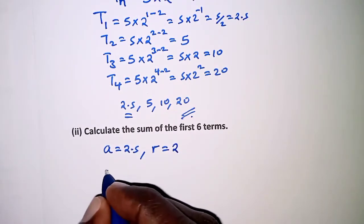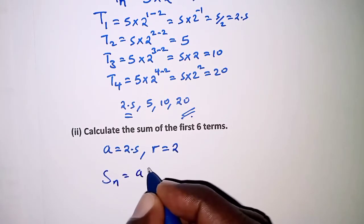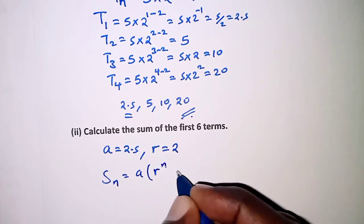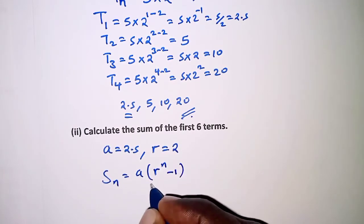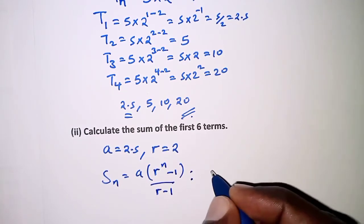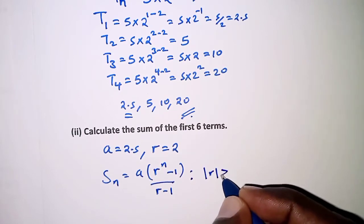GP, and the sum of GP is given by: the first term times r^(n-1) over (r-1). And this is specifically for the case where the absolute value of r is greater than 1.